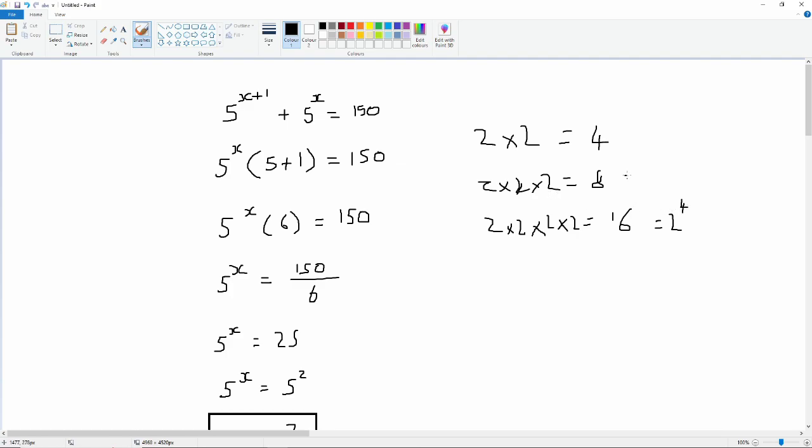Likewise, with 2 times 2 times 2, we could say that's 2 to the power of 3. And 2 times 2, we can say that's equal to 2 squared. So, now we notice what we're doing here. When we're multiplying by another 2, we're basically just adding 1 to the index. So, 2 times 2 times 2 times 2, and then we multiply that by 2, which will be 32. That's the same as saying 2 to the power of 4 plus 1.